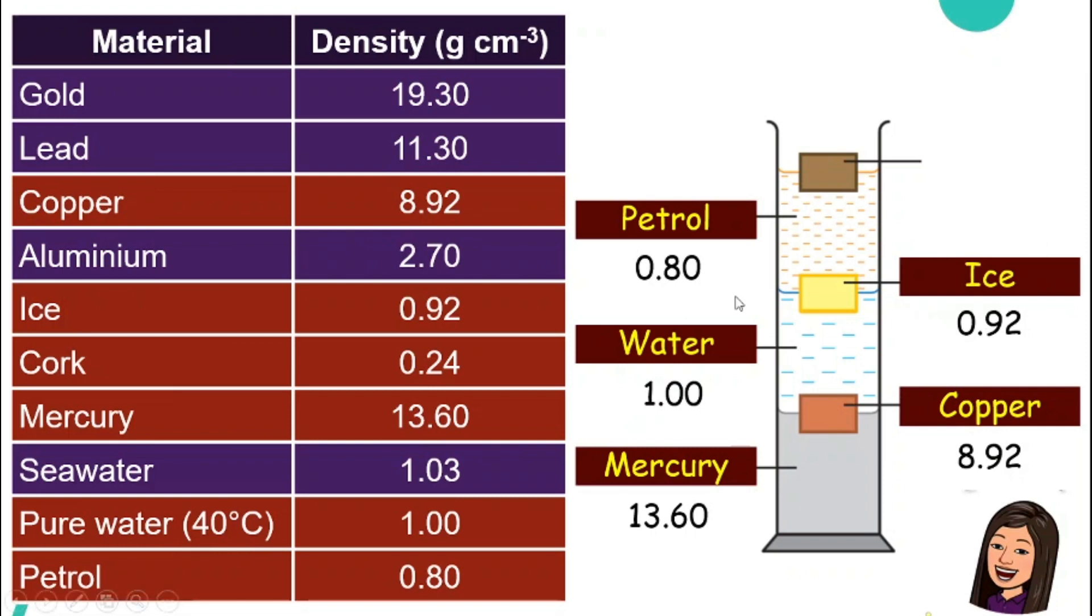So it will definitely float in water because it has a smaller density compared to water. But ice has higher density compared to petrol. That's why ice will actually sink if we put it in petrol. And how about the one on the top? It is cork. It is the lowest density of all. So it will float at the top.